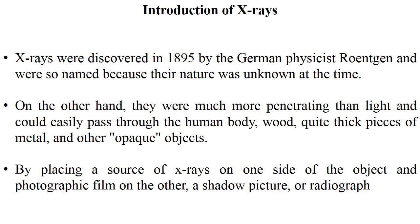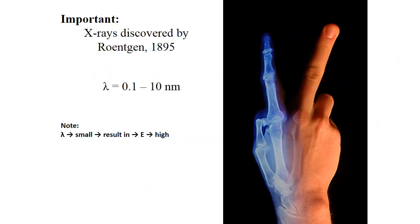By placing a source of X-rays on one side of the object and a photographic film on the other, a shadow picture or radiograph can be obtained. This is the mechanism by which you can pass X-rays through any object, placing it between the X-ray source and the detector or photographic film. Here a human hand is shown: the left side irradiated with X-rays appears light blue, while the right side irradiated with ordinary light shows that ordinary light cannot pass through the body, but X-rays do and form a radiograph.